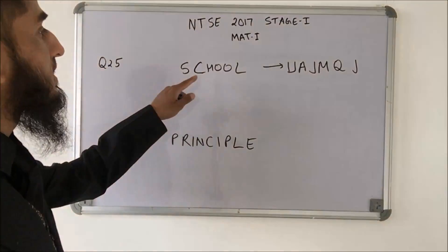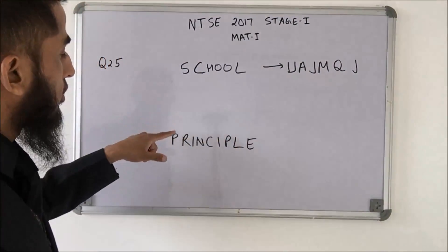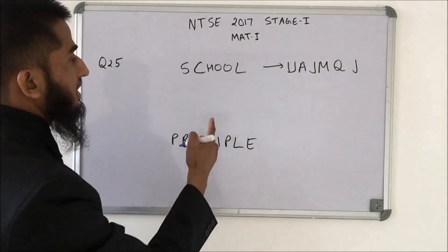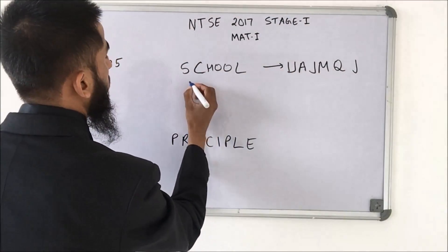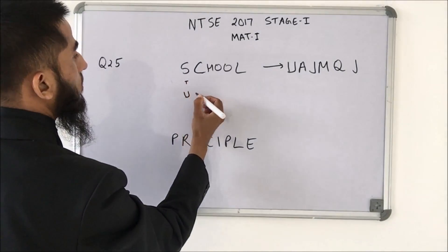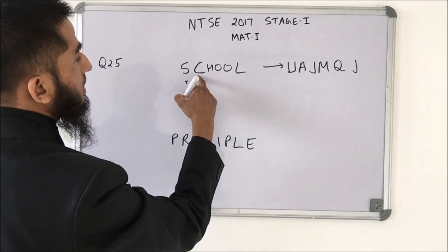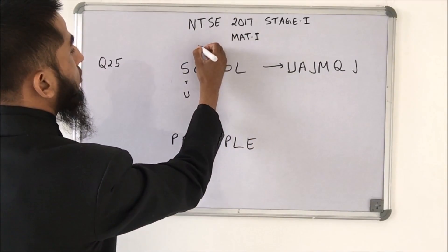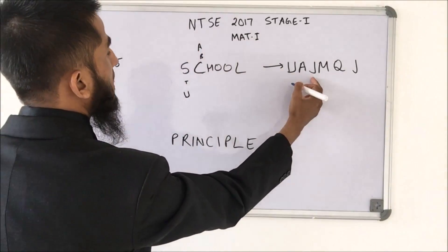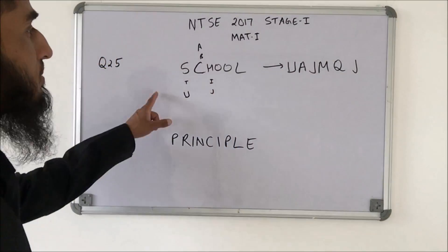In this question, SCHOOL is coded as U, A, J, M, Q, J. Let's look at the pattern: S is coded as U (S→T→U, two steps forward); C is coded as A (A→B→C, two steps before); H is coded as J (H→I→J). So the pattern alternates: each letter is coded two positions forward or backward.